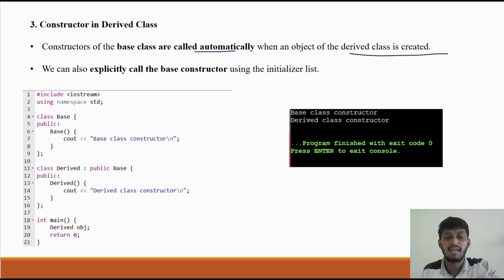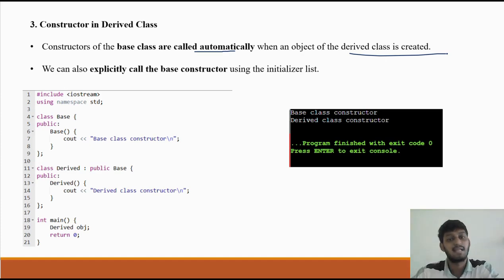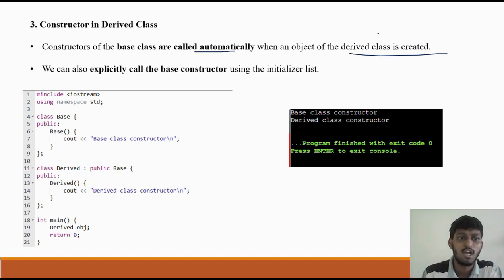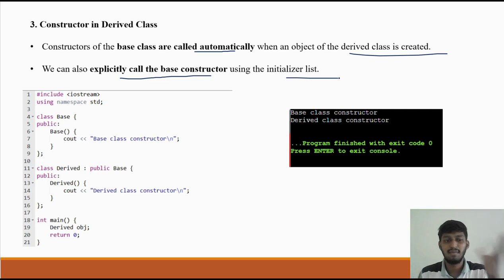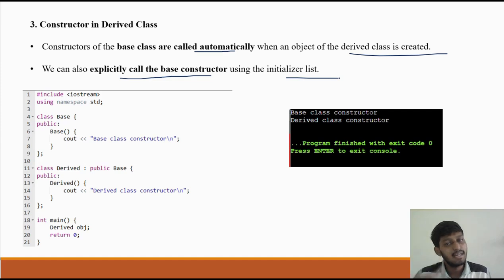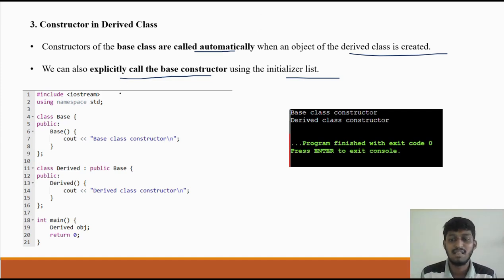When the object is created, the base class constructor is called first and then the derived class constructor is called. We can also explicitly call the base constructor using the initializer list, but it is not necessary because when a derived class object is created, the base class constructor is called automatically.